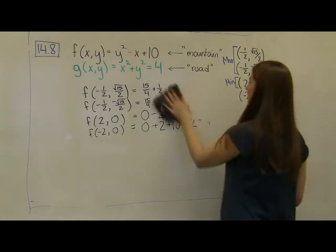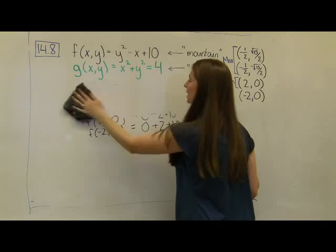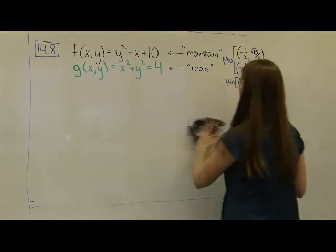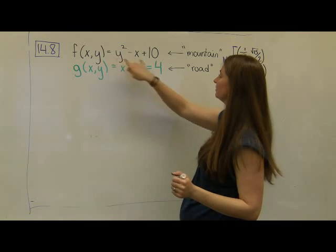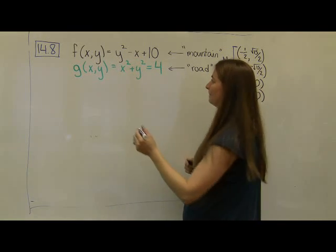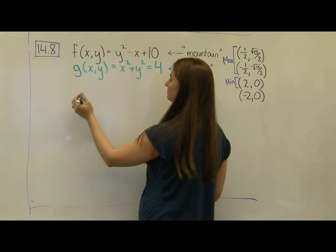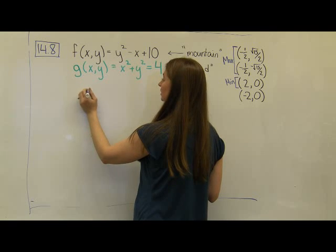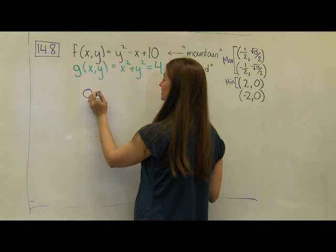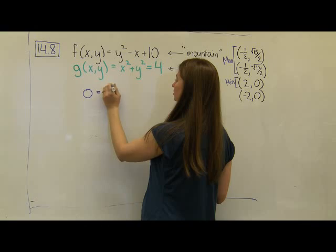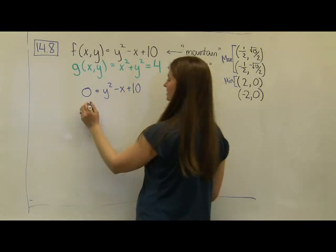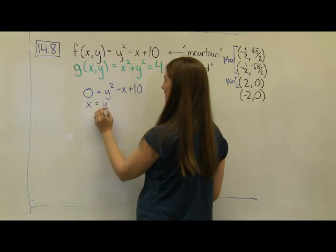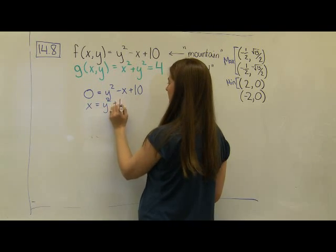So to analyze this, I'm going to look at a contour plot of our f(x,y) function. Looking at this f(x,y) function, I'm going to set my z value equal to 0. So if my z value is equal to 0, I'm going to get y² minus x plus 10. And if I solve this for x, it means that x is equal to y² plus 10.